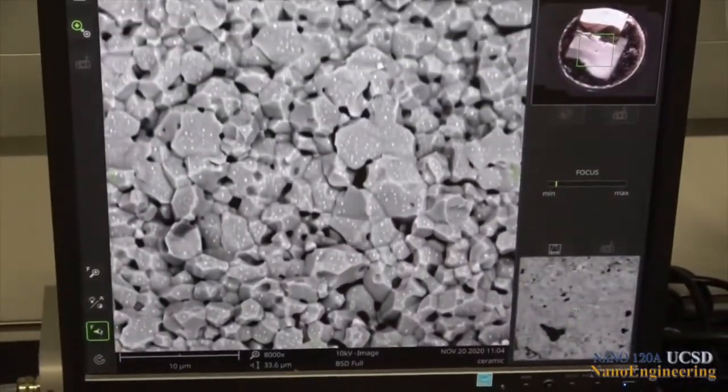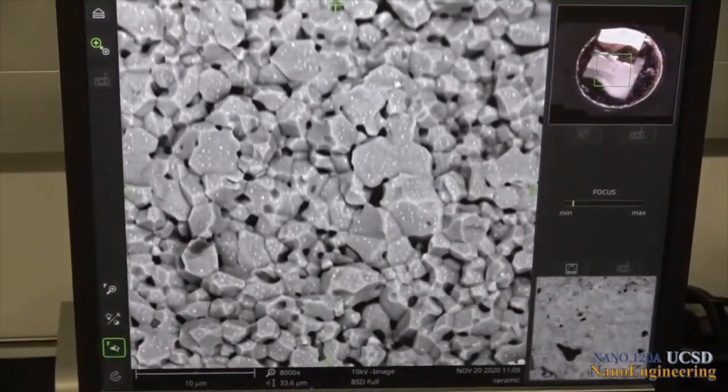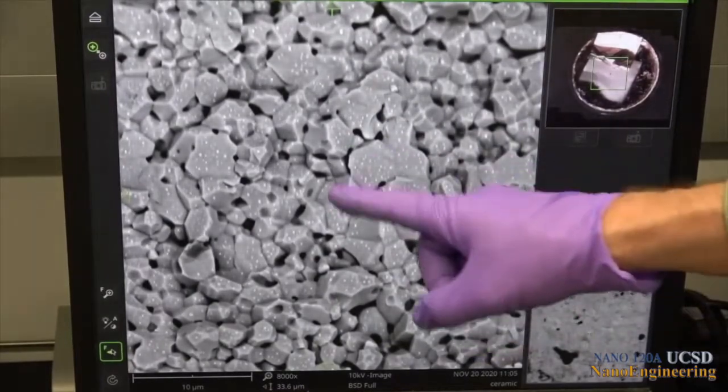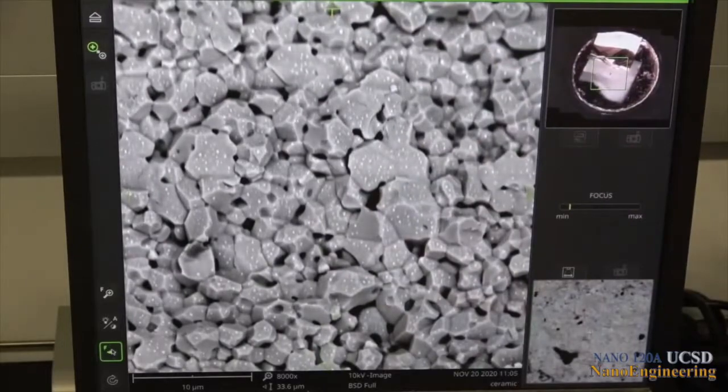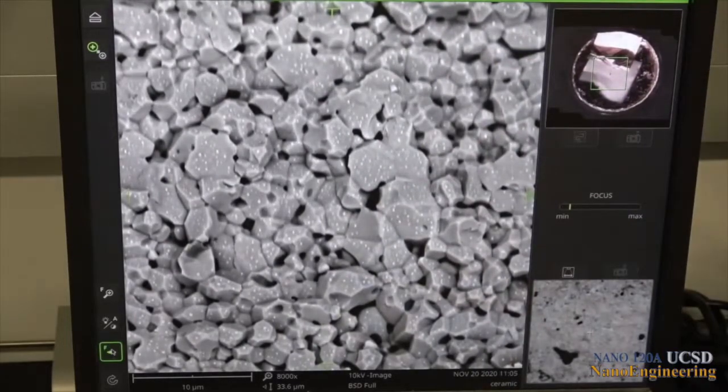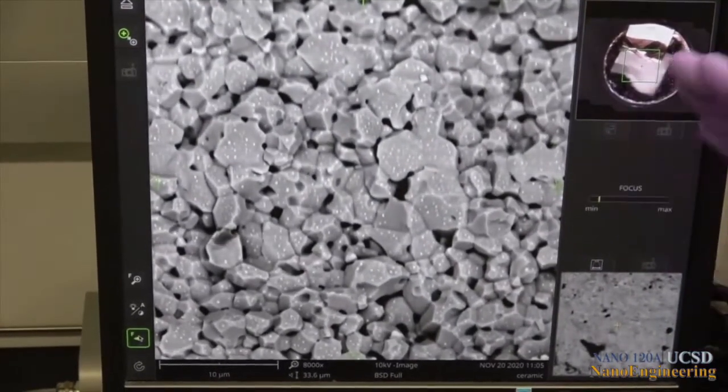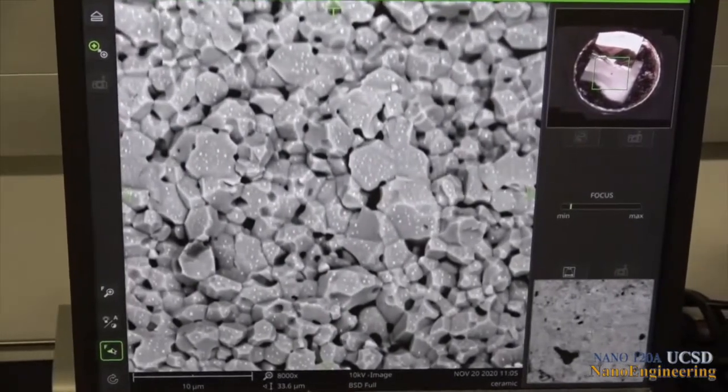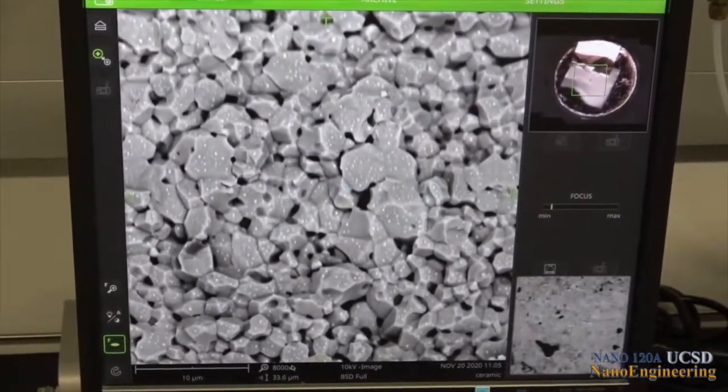This sample was prepared by pressureless sintering a powder compact of titanium oxide powder to approximately 90% density. Note the grain structures and porosity present. The capability of the backscatter detector to exhibit atomic number contrast can be shown by the brightness differences observed between the titanium rich grains of atomic number 22 and the brighter small specks or flakes of gold of atomic number 79 that was sputtered on the fractured surface.